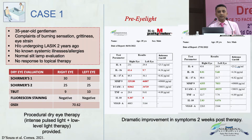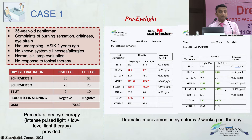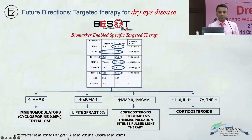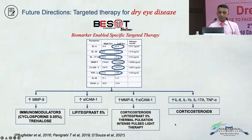How does it matter clinically? Let us take an example. In one such case, we checked the cytokine levels and found that MMP9 was pretty high. The patient had IPL treatment, and post-IPL treatment the MMP9 levels reduced. The future direction is: once you analyze these analytes and find that MMP9 levels are high, you can do targeted treatment — maybe cyclosporine or trehalose. When ICAM levels are high, in future we will have lifitegrast to treat those patients. When multiple markers are abnormal, you might have to treat them with corticosteroids.